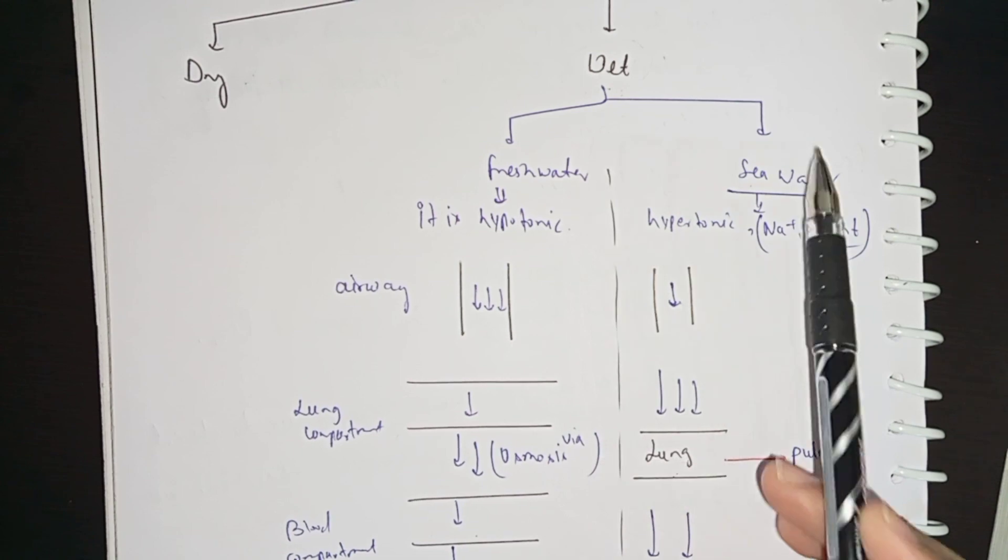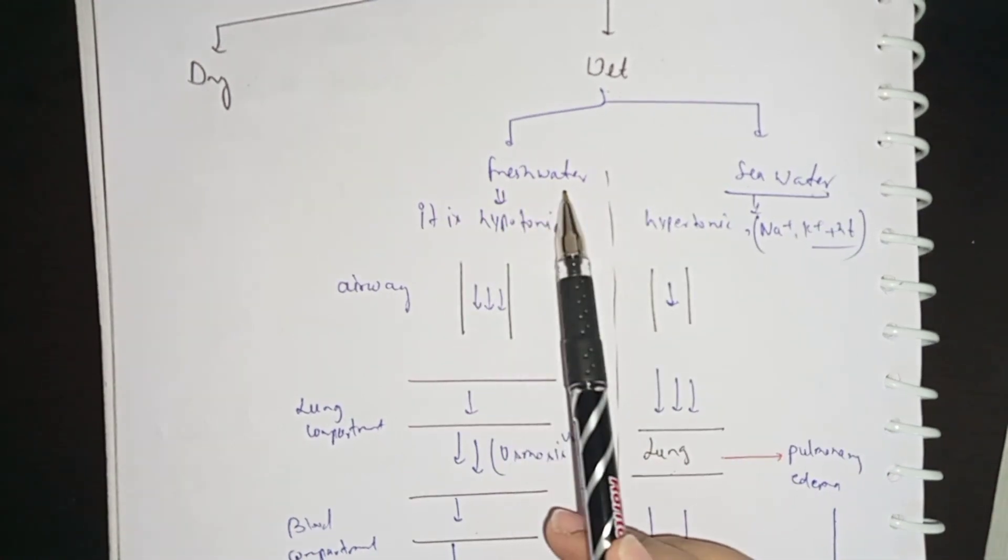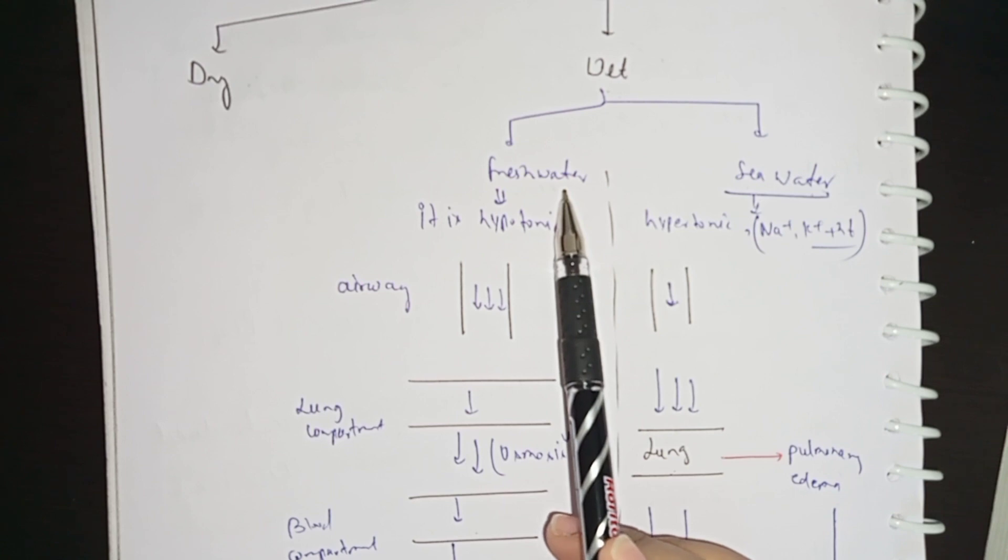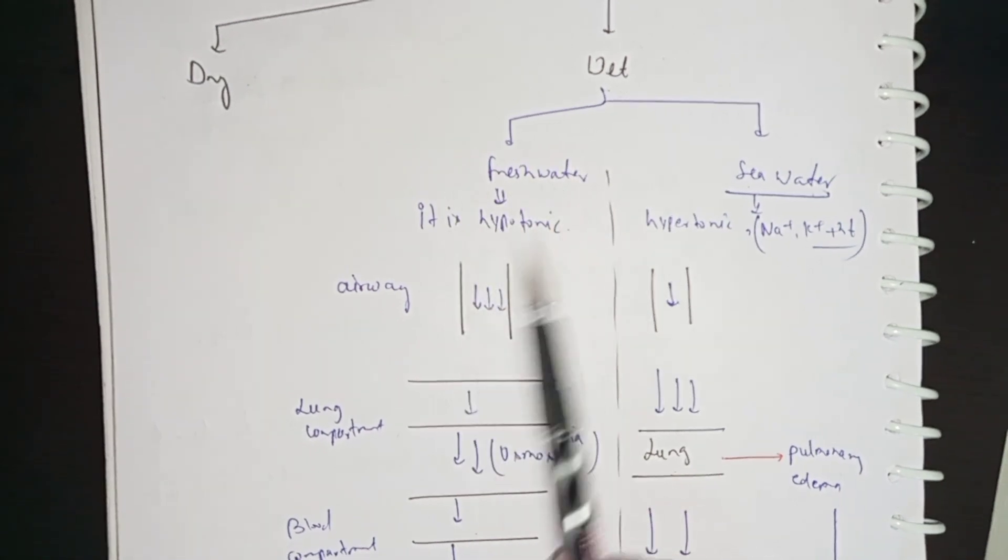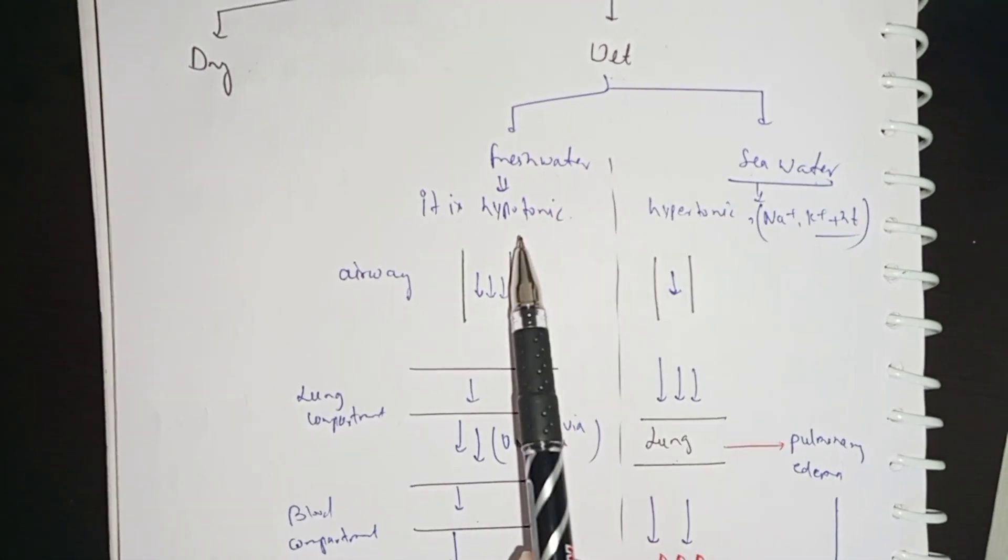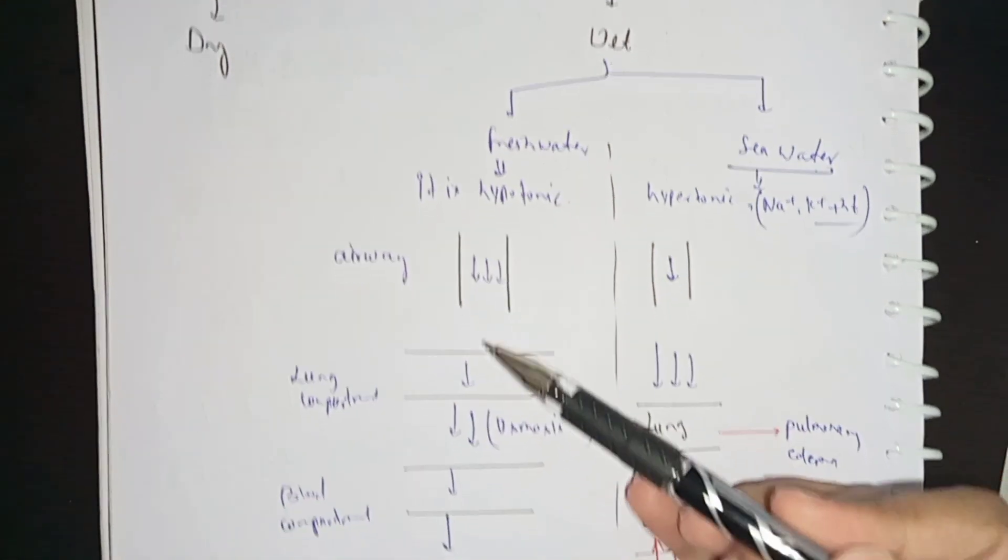Fresh water - we know that if electrolytes are less, then we will have a hypotonic condition. So fresh water is a hypotonic condition. When air flow will flow, the path is going to be your airway.